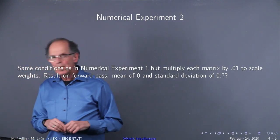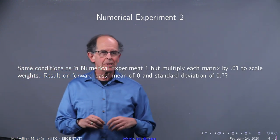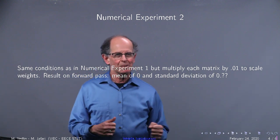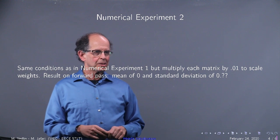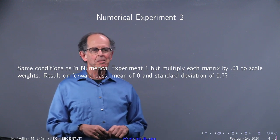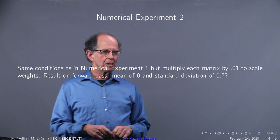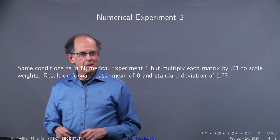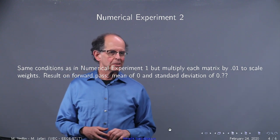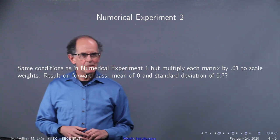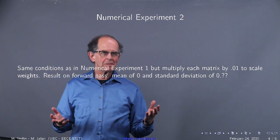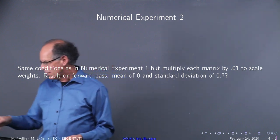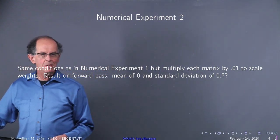The second experiment is same conditions. So let's make it smaller. Multiply each matrix by 0.01. Scale the weights. Result on forward pass: mean of zero and standard deviation of zero. That means we're not going anywhere and we're disconnected from each other in terms of if I'm a weight. That's essentially related to vanishing gradients. But if the weights are 0, you're not going anywhere in terms of statistical behavior.